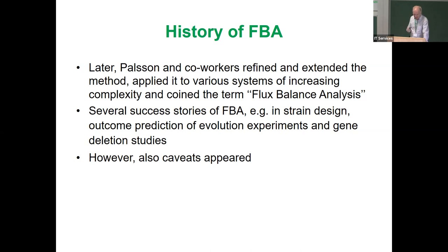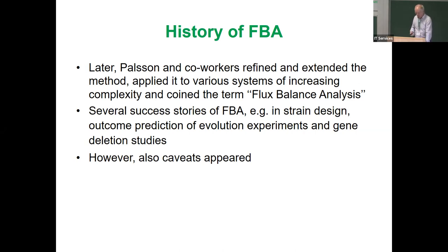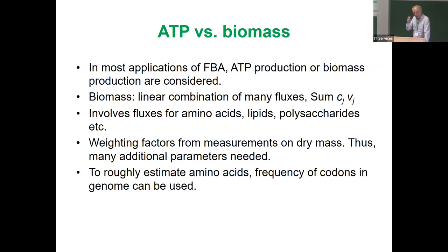My talk will be a little bit critical about FBA, but I also acknowledge many success stories — I think it's appropriate in science to discuss pros and cons. An important question is: what is the objective function? In most cases it's either ATP production or biomass production. Biomass is a linear combination of many fluxes — we need amino acids, lipids, carbohydrates — often written as a sum of c_j · v_j.